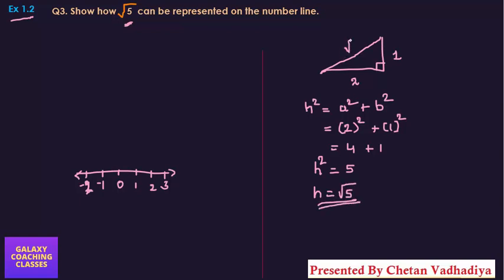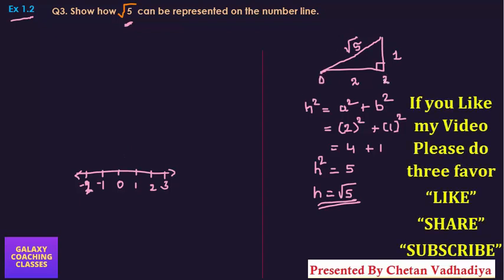Now we got this length as √5. By our imagination, we are going to draw the same triangle on this number line. First of all, our base: this is 0 and this is 2, because 2 centimeters. This is your base.